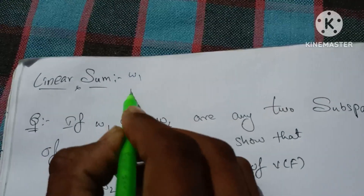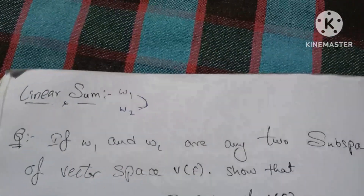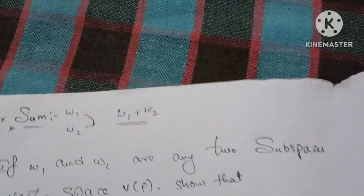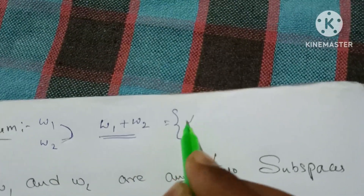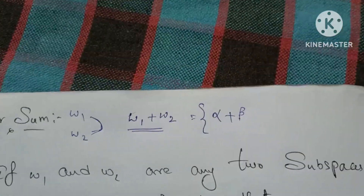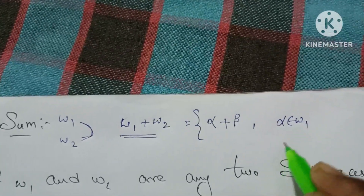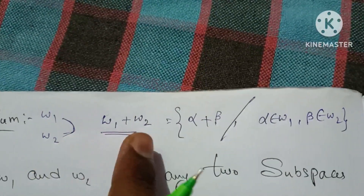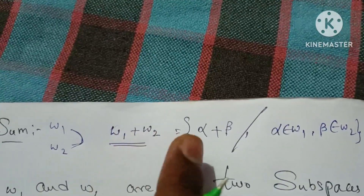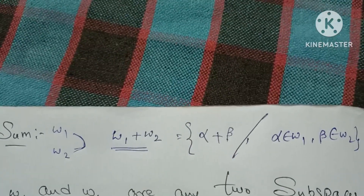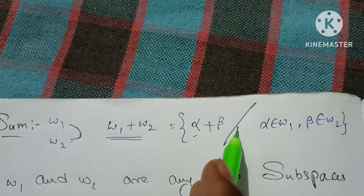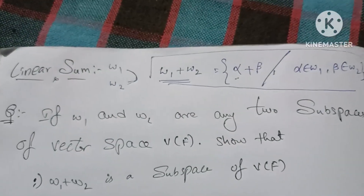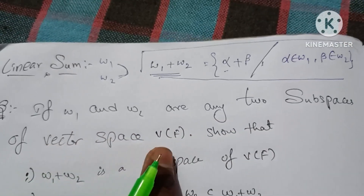Let's talk about W1 and W2. If W1 and W2 are any two subspaces of a vector space, then we are going to show that W1 plus W2 is a subspace.